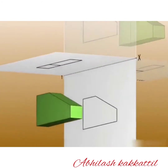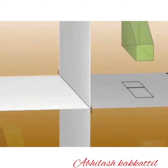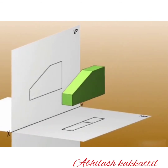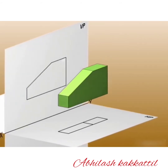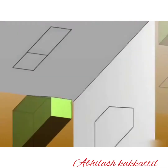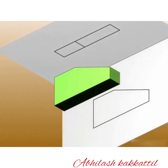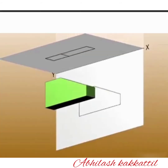Similarly, when the object is situated in the third quadrant, the projection is known as third angle projection. In first angle projection, the object lies above the HP and in front of the VP, and the projection appears like a mirror image. In third angle projection, the object lies below the HP and behind the VP, and the plane of projection is assumed to be transparent.